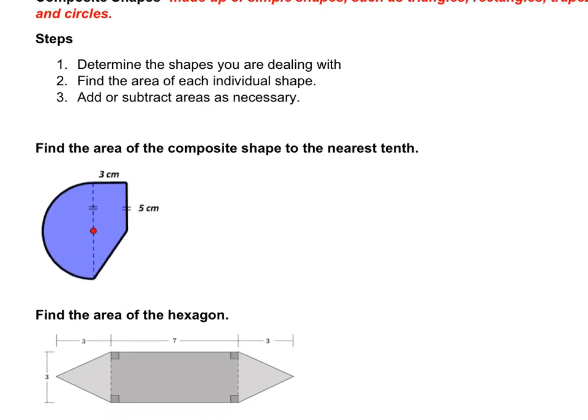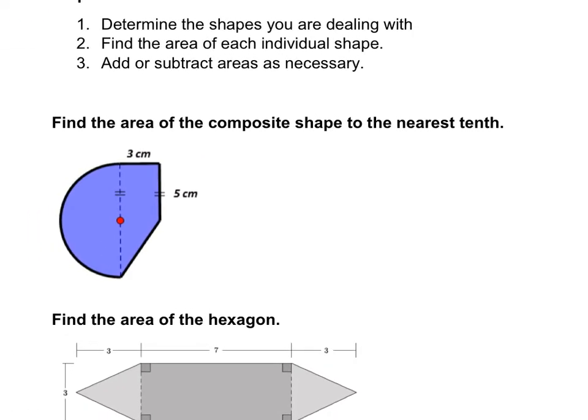All right, so let's do our first example. It says find the area of the composite shape to the nearest tenth. So the first thing I'm going to do is I'm going to write down the shapes I'm dealing with. So this shape right here, I'm just going to write this as the number one. So my area of this figure is equal to the area of shape one plus the area of shape two. You don't have to do it like this, but I just do it to make myself know where I'm going.